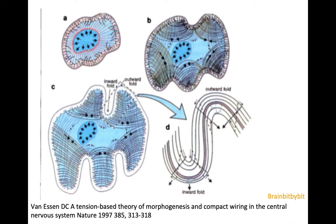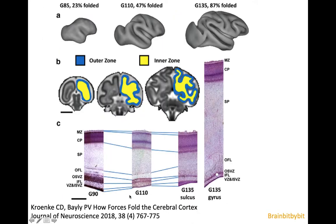Another theory is that during development — when this is the primitive ventricle, and in red you have the radial glial cells as discussed earlier — neurons migrate towards the cortex. Then from the cortex, axons form between different brain regions. These axons exert tension and pull different brain regions together, causing the folding of the brain. This theory was published by Van Essen in Nature 1997 and also explained in the Journal of Neuroscience 2018.